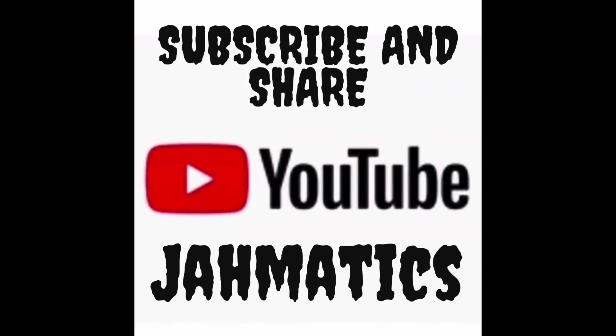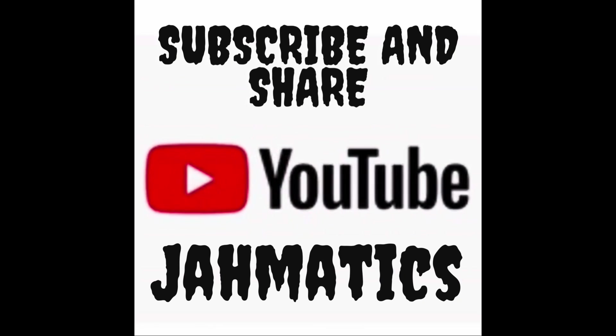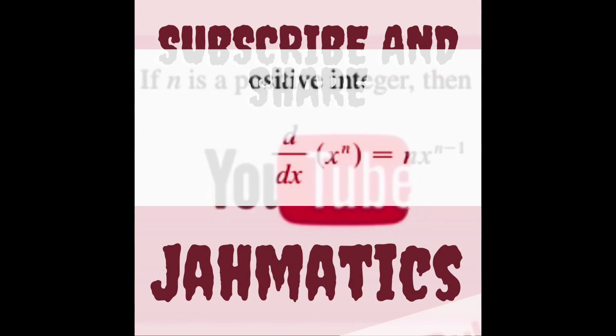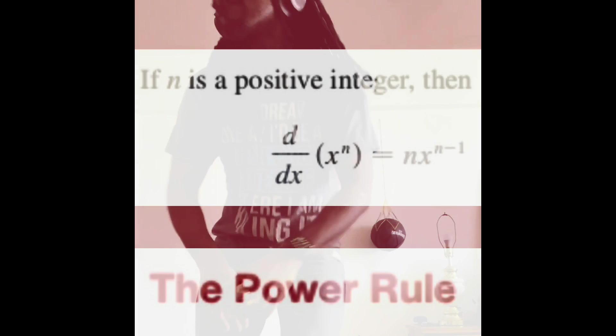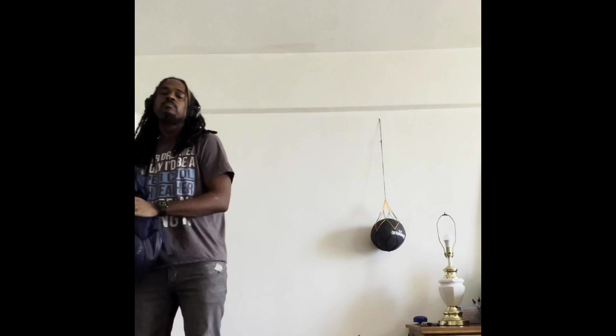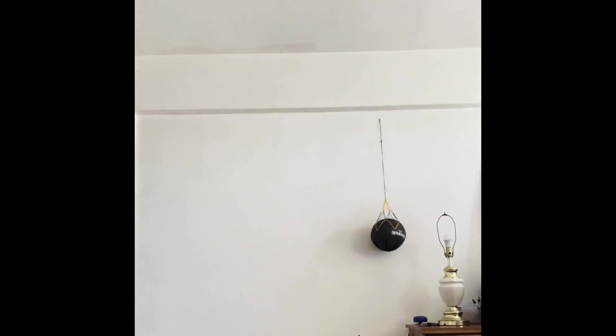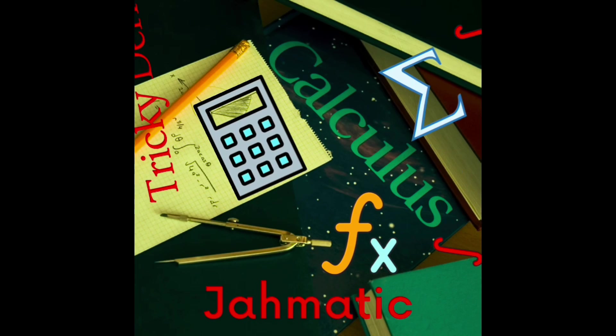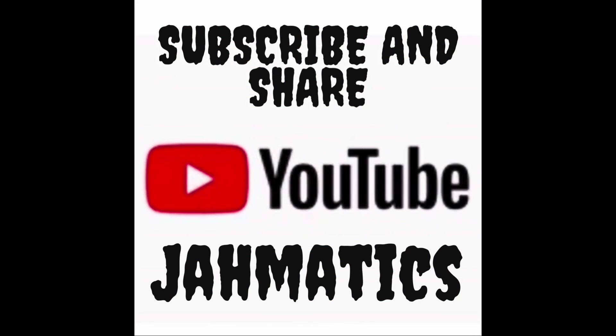Remember chain rule, look that one up. Research the power rule as well. Derive x to the n equals n times x to the n minus one. Derive x to the n equals n times x to the n minus one. That's what it gives you out. Chomatics! God bless.